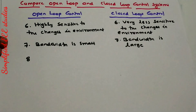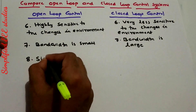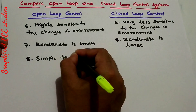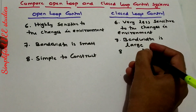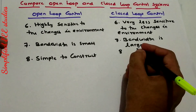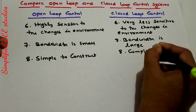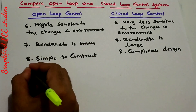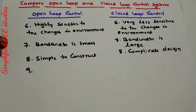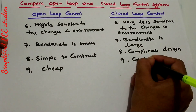Eighth point: open loop control is very simple to construct, whereas closed loop control system is too difficult to construct — complicated design. Ninth point: open loop system is very cheap, whereas closed loop control is costlier.